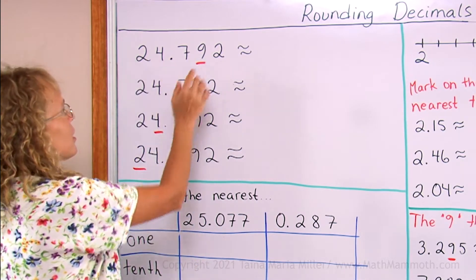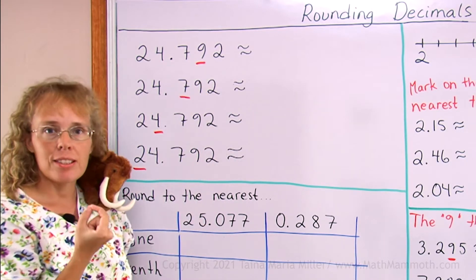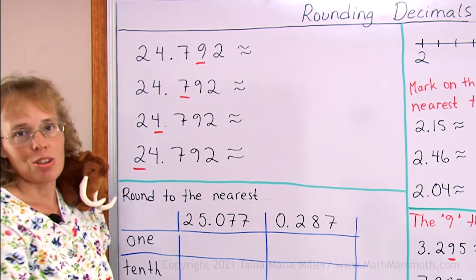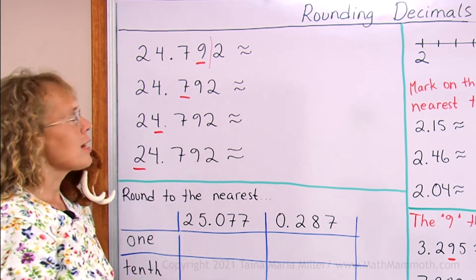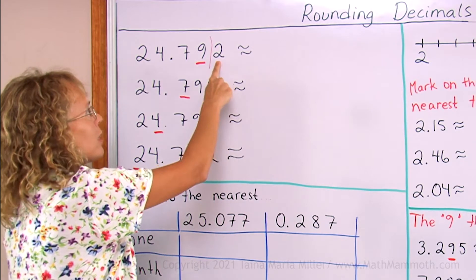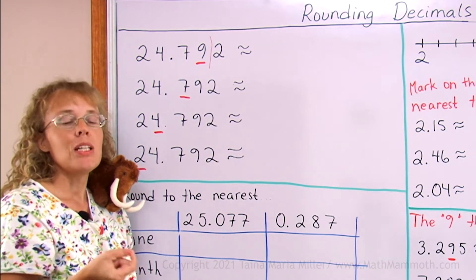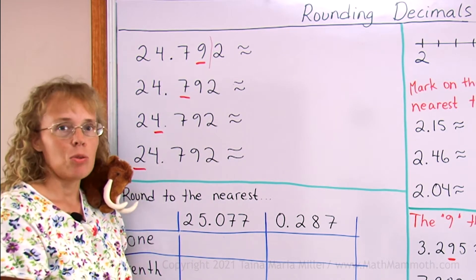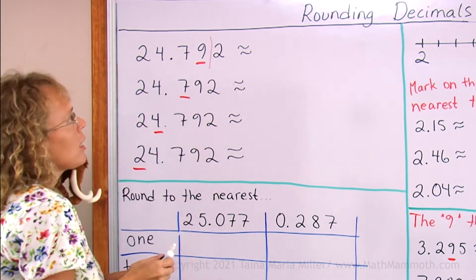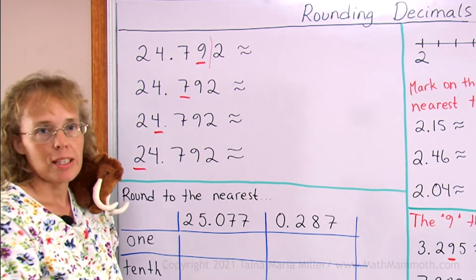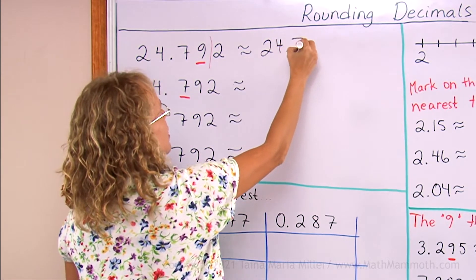If I want to round this to the underlined digit — this is the hundredths digit — I draw a line right after that digit and then look at the next digit. This one determines whether I round up or down. Two means I round down, so this will not change. Basically all that happens is we cut off the decimal at that line. So we get 24.79.